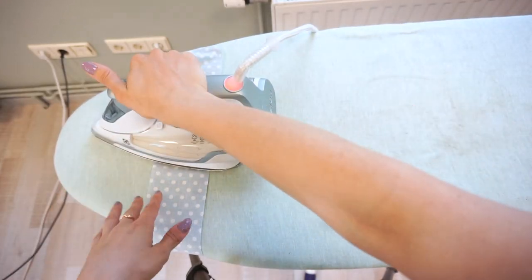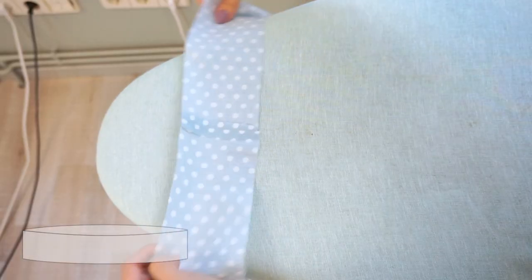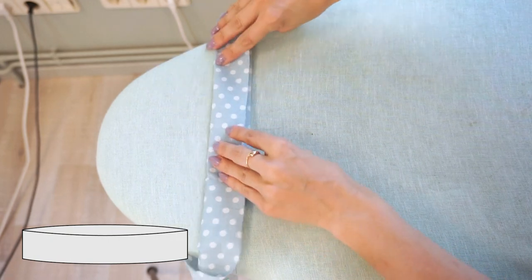Press the seam allowances open. Fold the waistband in half and press it around.